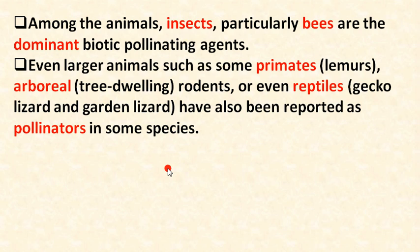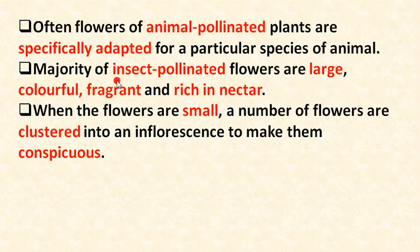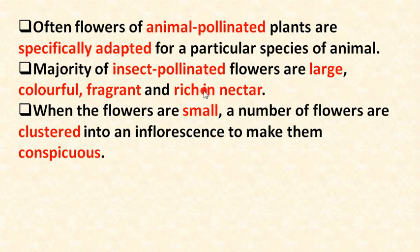Often, flowers of animal-pollinated plants are specifically adapted for a particular species of animal — meaning they develop a habit and become suitable for that animal. Majority of insect-pollinated flowers are large, colorful, fragrant, and rich in nectar.